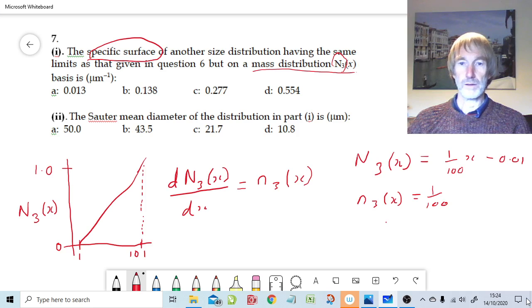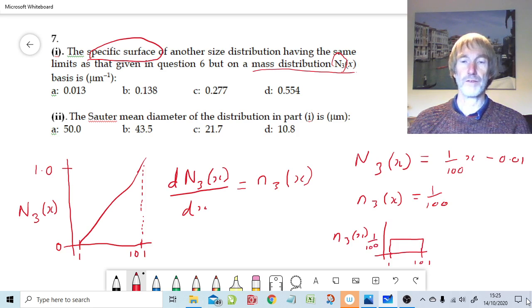What do I mean by that? Well, the graph would look something like this. If we were to plot n3x out, it would go from 1 to 101, and it would be a straight line, where the y value, or the n3x value, is 1 over 100, and therefore we fulfill the obligation that that is an integral that goes up to 1, from the units of 1 to 101.